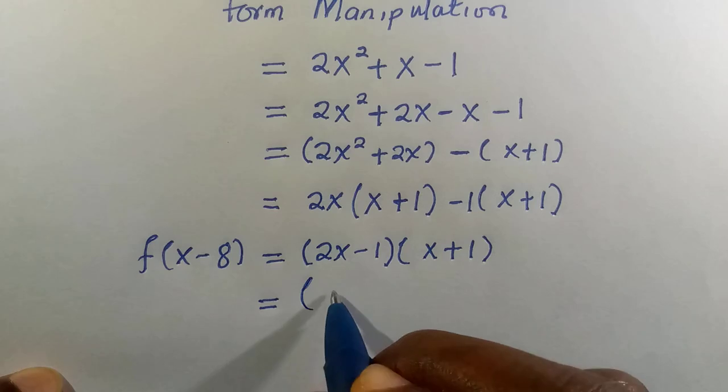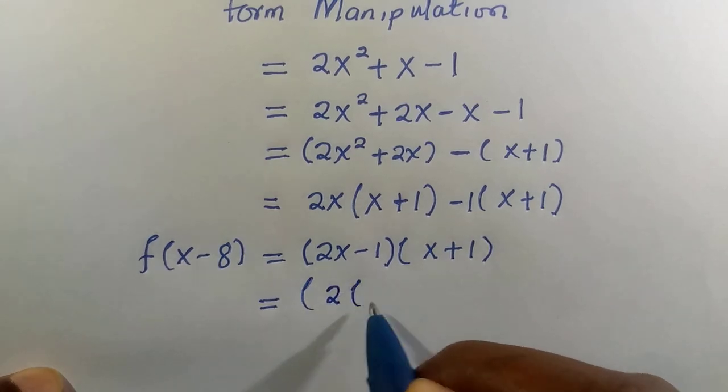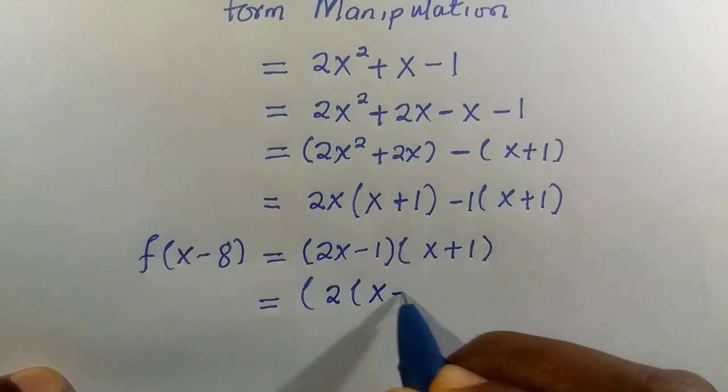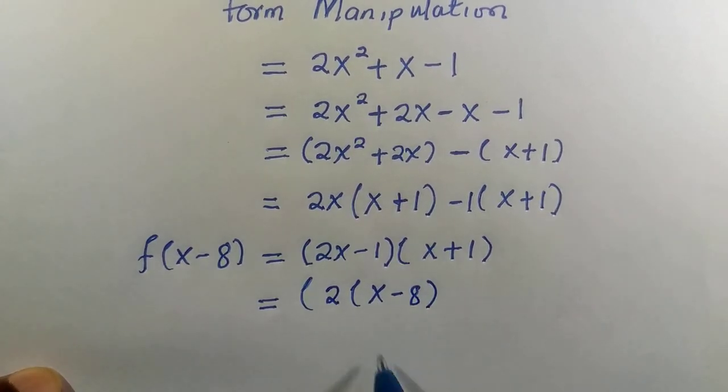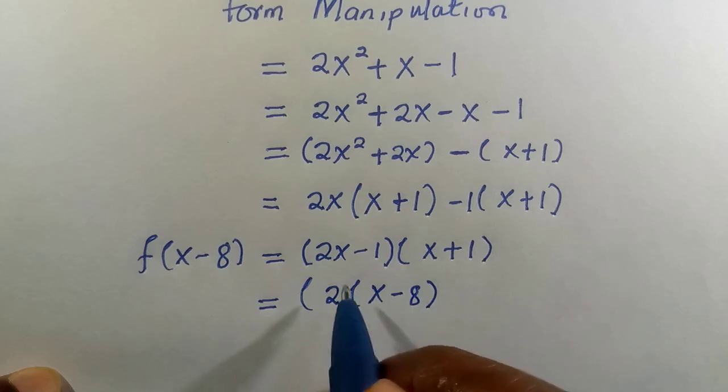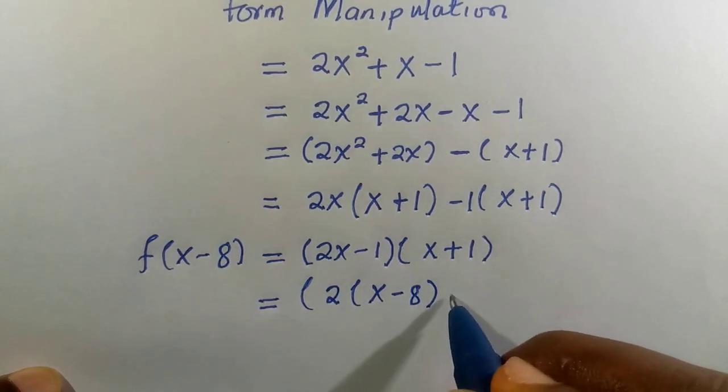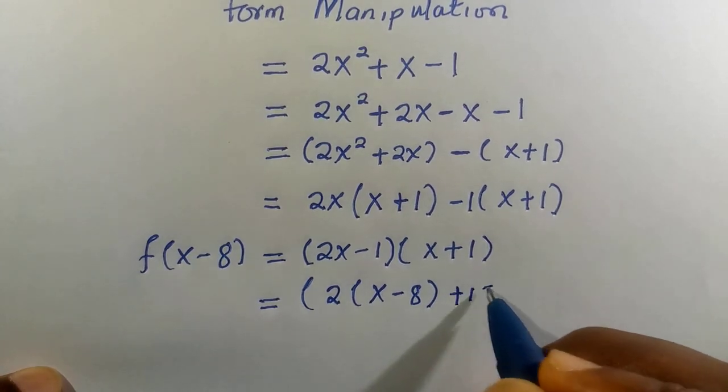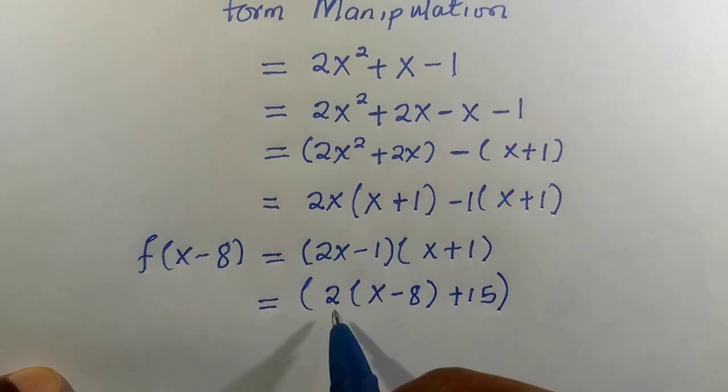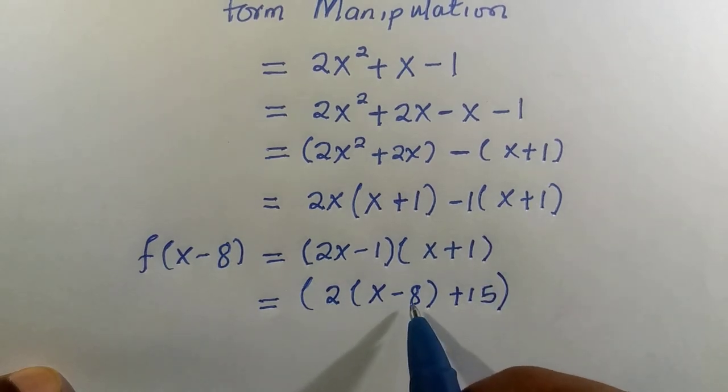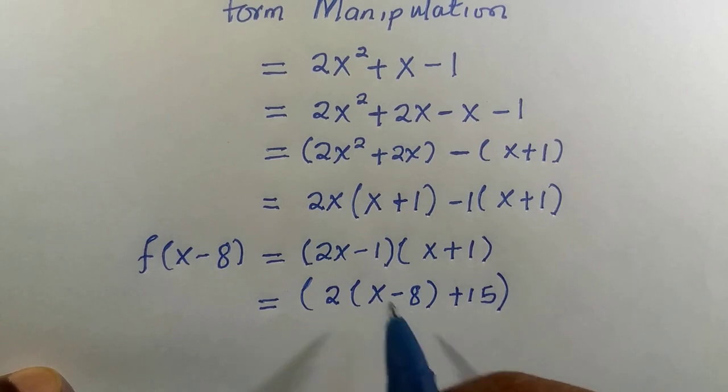Here, let's say I factor out 2 and write what I need, which is x - 8. So what this one is missing for us to get 2x - 1 is just +15, because 2 times -8 is -16, then -16 + 15 is -1.